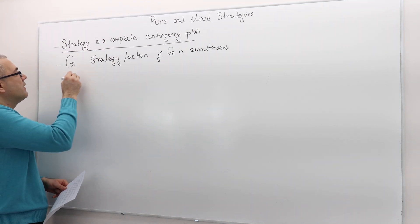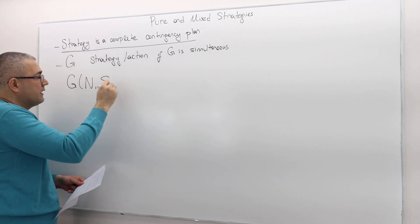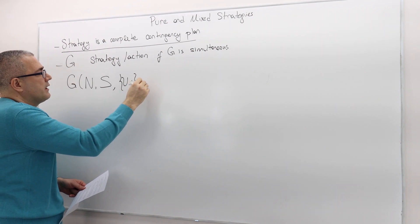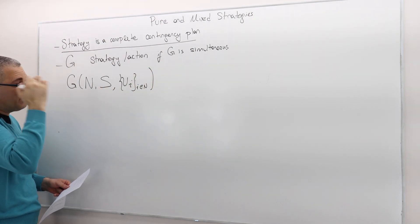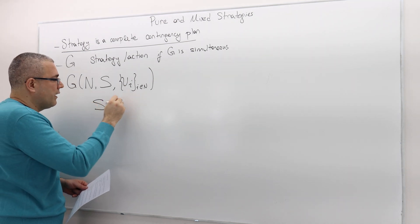In a game G, denoted by N, S, and then a collection of payoff functions. Remember, this is how we denote a game. S is basically a set of strategy profiles.